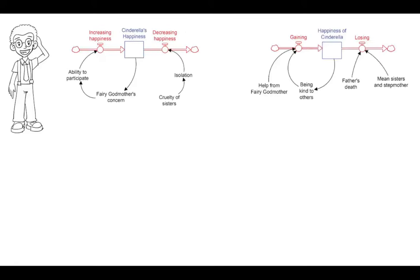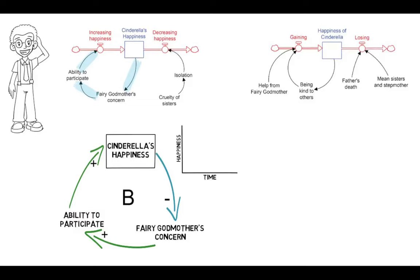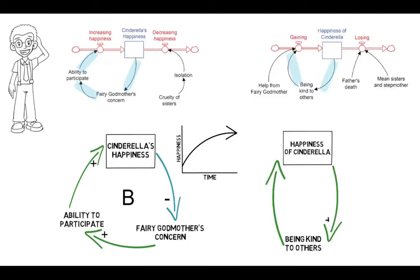Here are two stock flow maps showing two different perspectives on Cinderella's level of happiness. In the first example, if Cinderella's happiness is low, the fairy godmother's concern goes up, which increases the ability of Cinderella to participate, which increases her happiness — as a result, the fairy godmother would be less concerned. This is a balancing loop, which results in Cinderella's happiness increasing quickly at first and then slowing down. In the second example, as Cinderella is kind to others, her happiness goes up, which causes her to be even more kind, and thus more happy. This is a reinforcing loop, since her happiness increases more and more with each time around the loop.